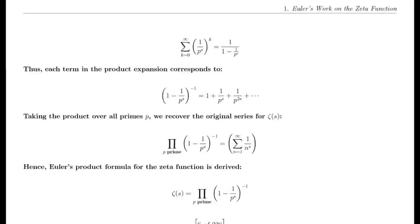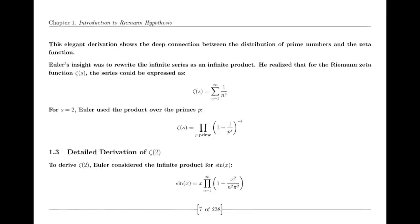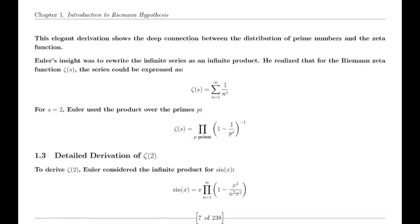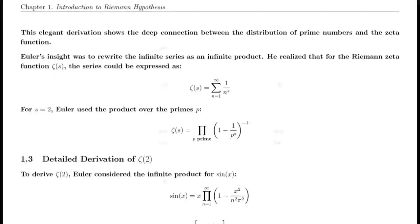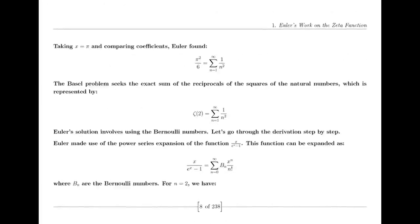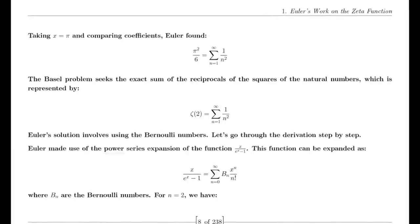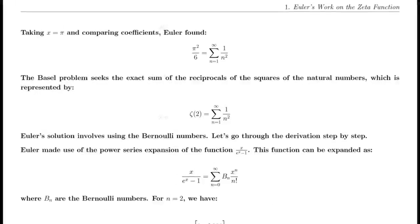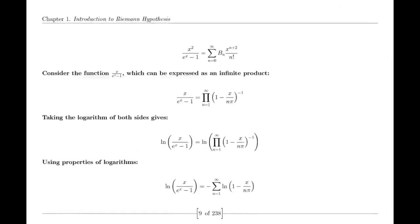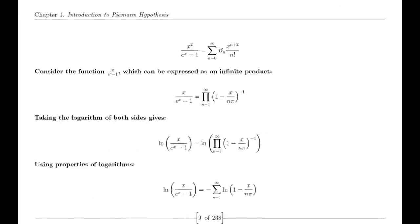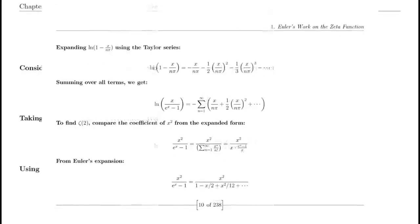Riemann also made use of the Jacobi-Theta function, which has significant applications in various areas of mathematics. The Theta function's series representation and modular properties were instrumental in Riemann's derivation of the functional equation for the zeta function. This equation is crucial for understanding the zeta function's behavior across the complex plane and highlights its intricate connections to other mathematical functions.